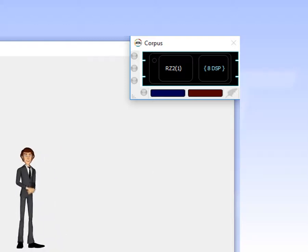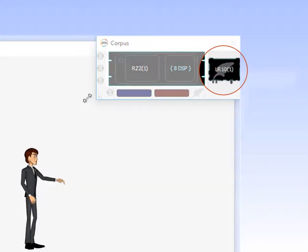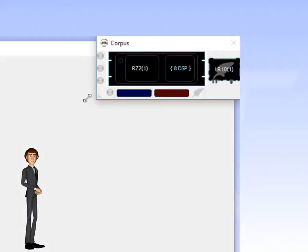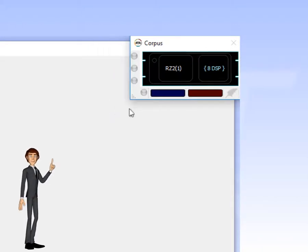Corpus is also the program that communicates with the LabRat device. Drag here to see the LabRat device connected to the emulated RZ2 DSP processor. Appreciating that LabRat connects to Synapse through Corpus is important to understanding how signals are accessed from the Synapse software.